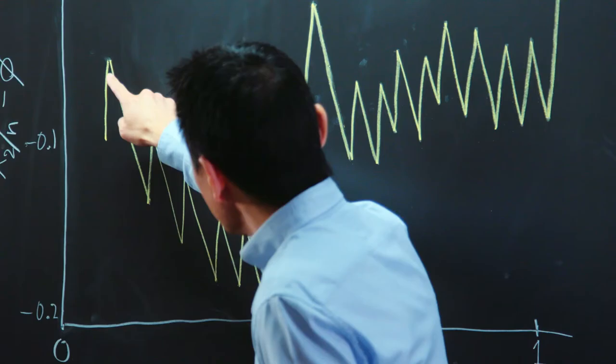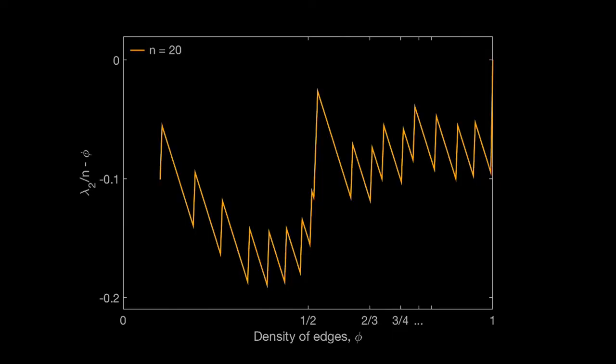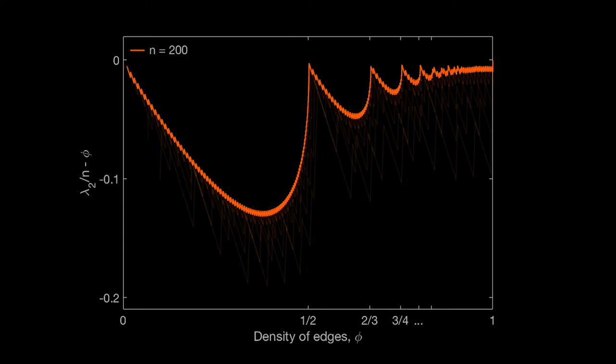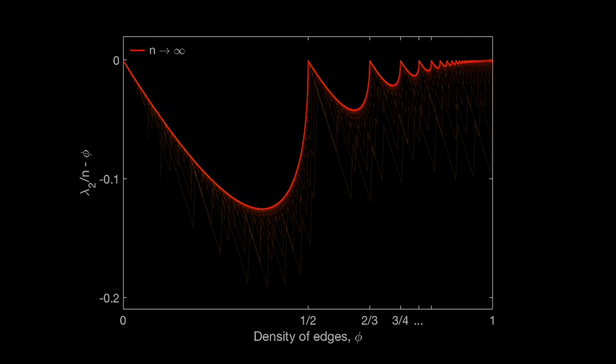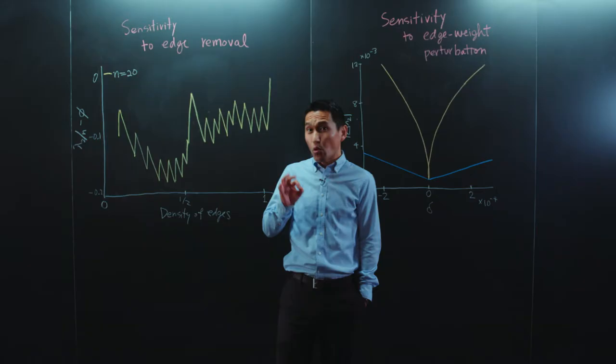As a function of the density of edges, this eigenvalue exhibits cusp-like peaks. These peaks become more pronounced and larger in number as the network size increases. In fact, there are infinitely many, infinitely sharp peaks in the limit of large networks. Such cusps are signatures of extreme sensitivity to structural changes.